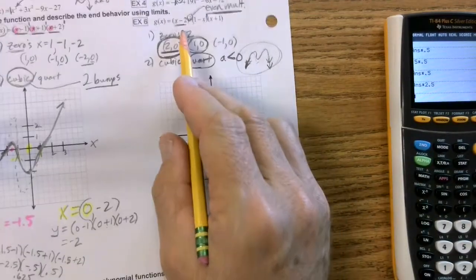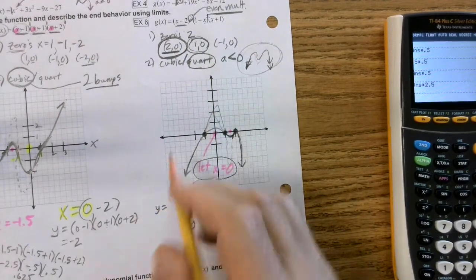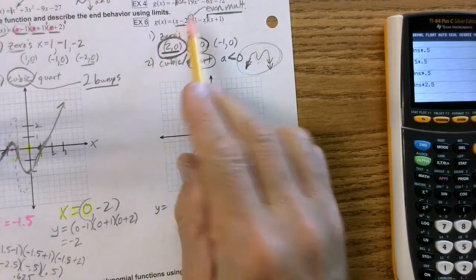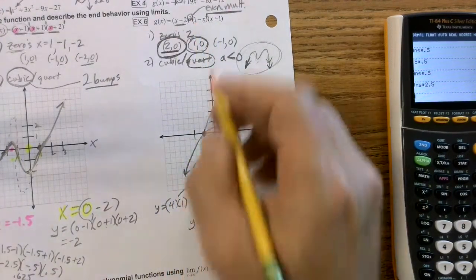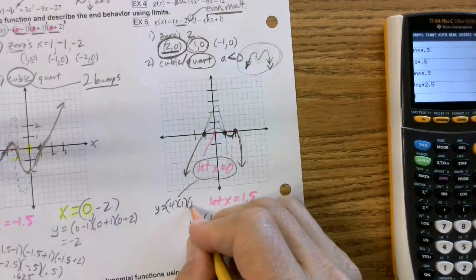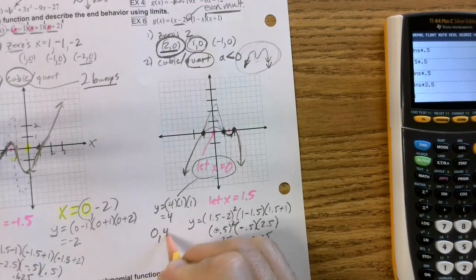So I'll show my work over here. This is going to be a lot easier plugging in 0s. I can just do this in our head. So y equals, well, that would just be negative 2 squared, which is 4. 1 minus 0 is just 1. 0 plus 1 is another 1. So y equals 4 if x is 0. You see that?